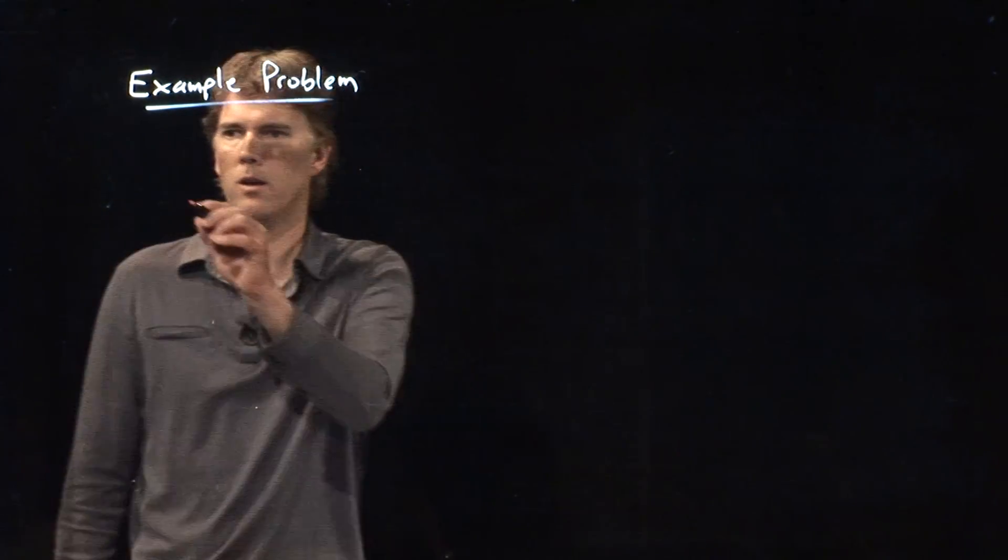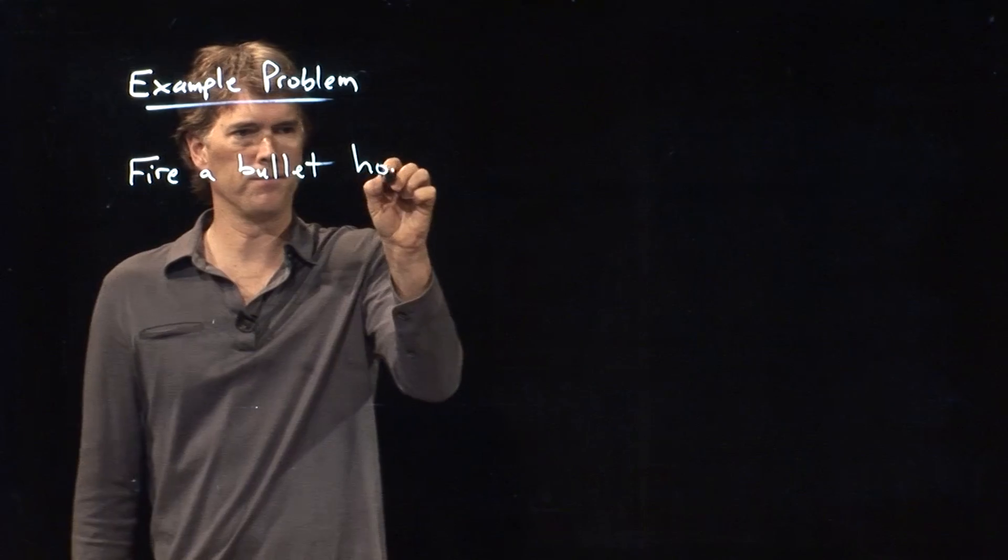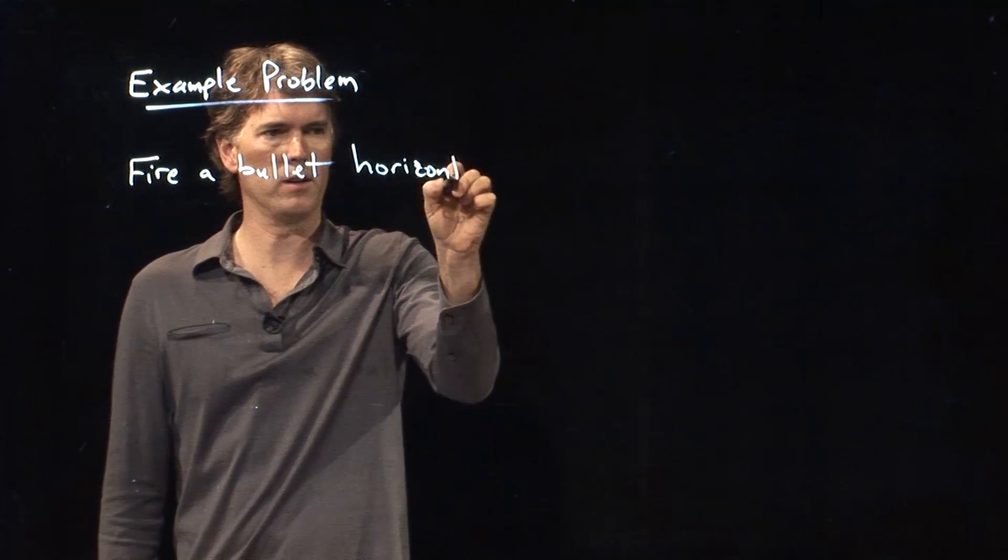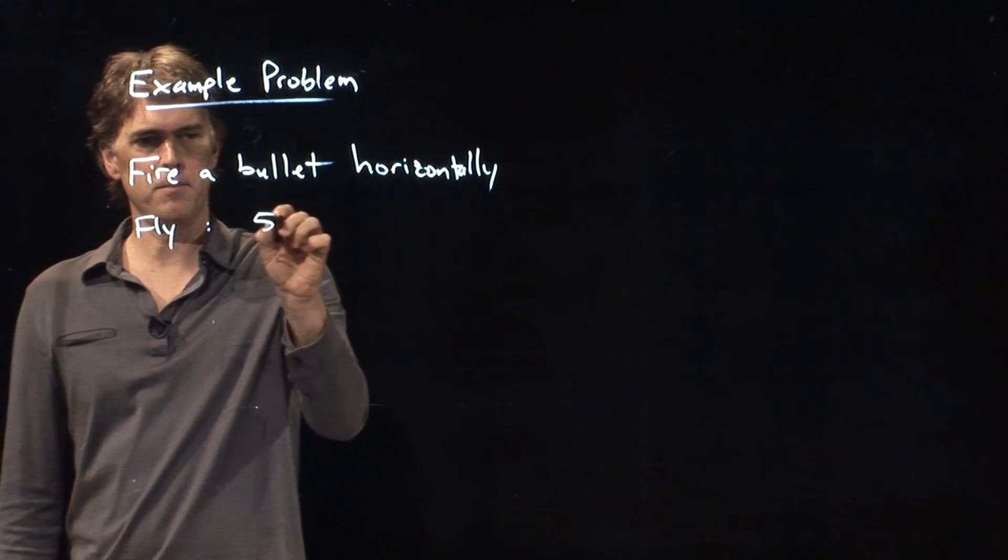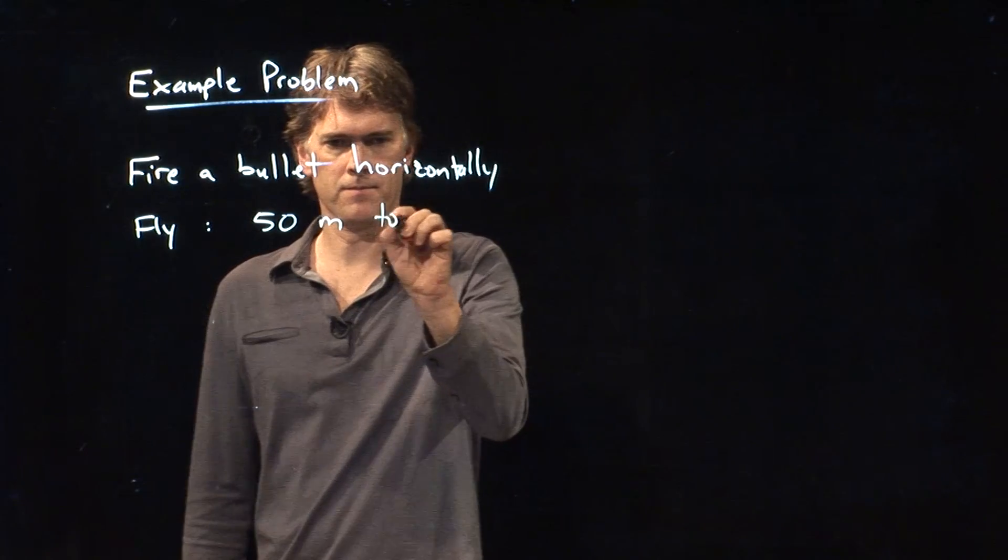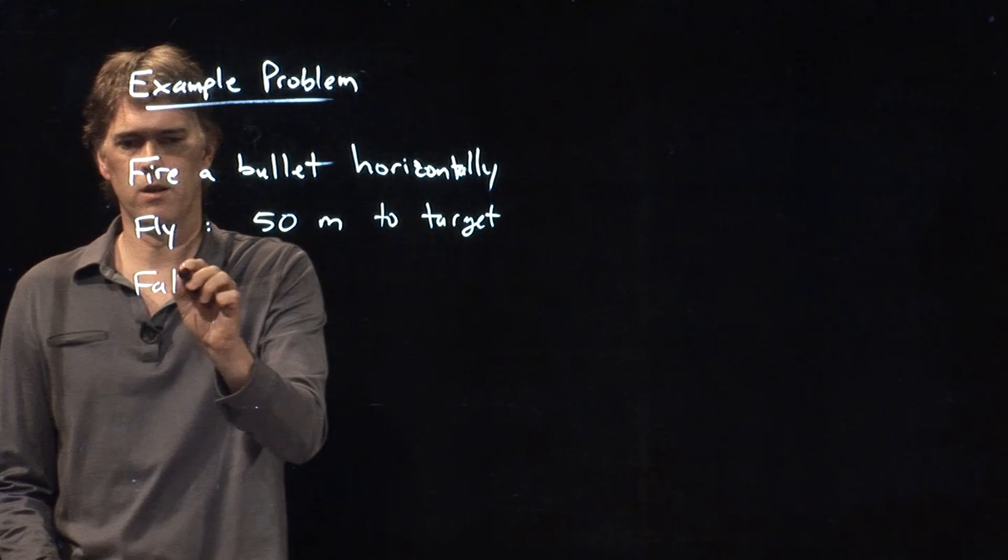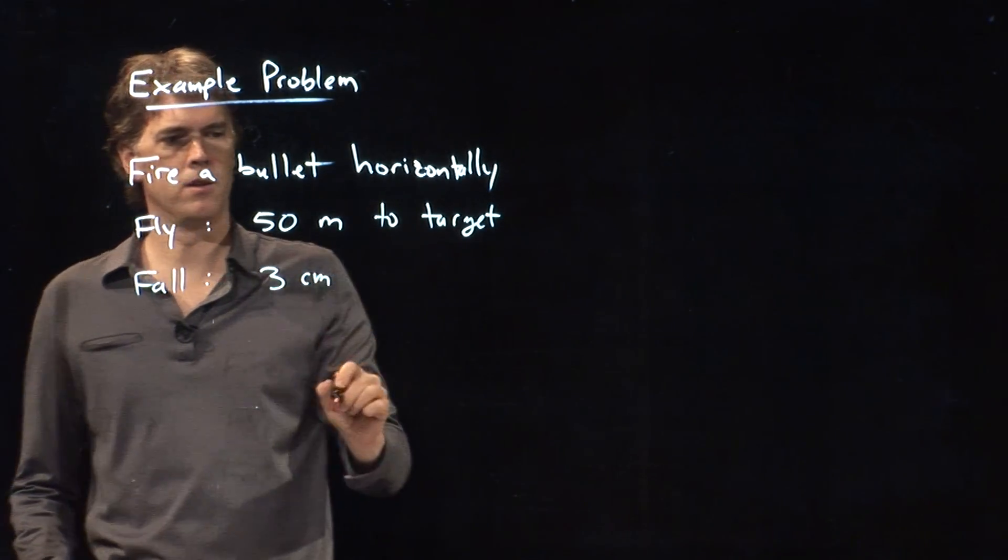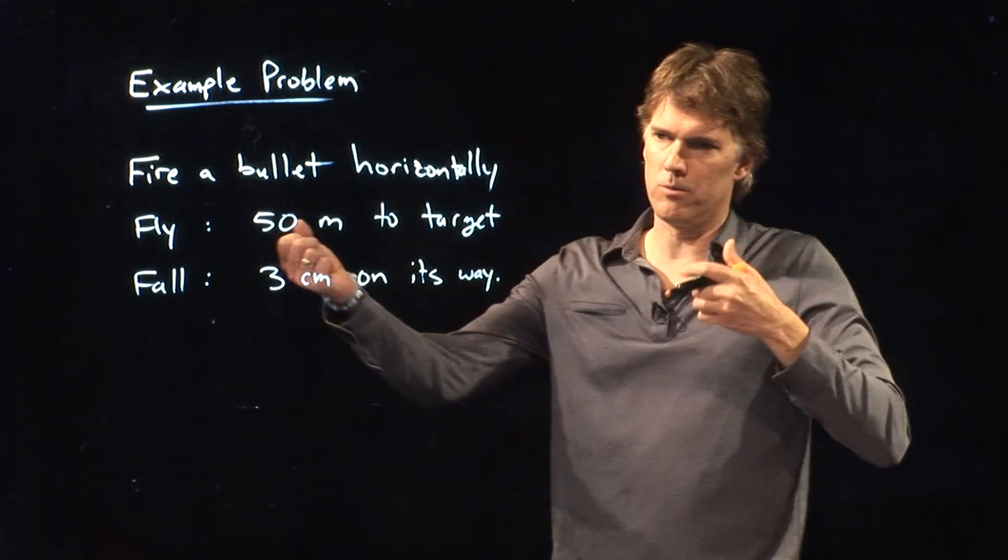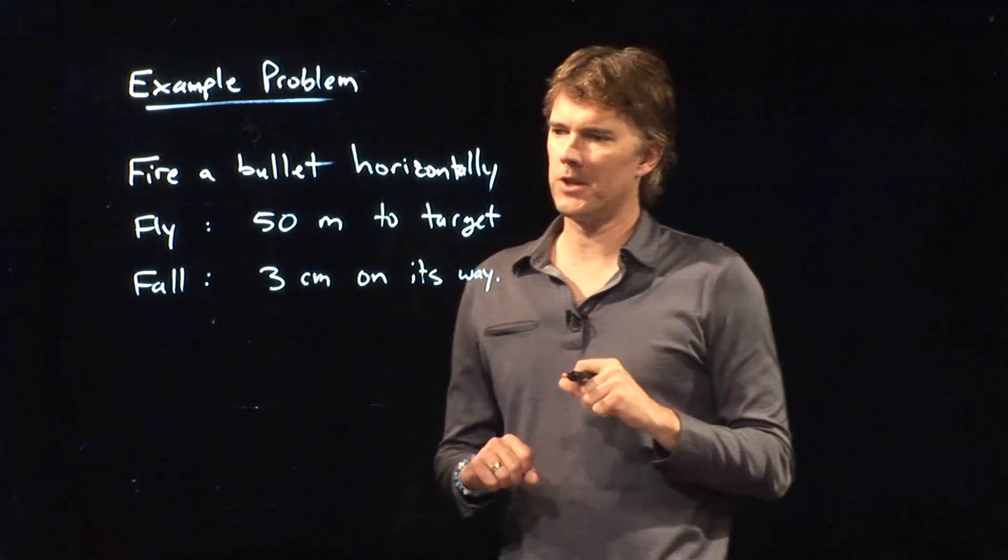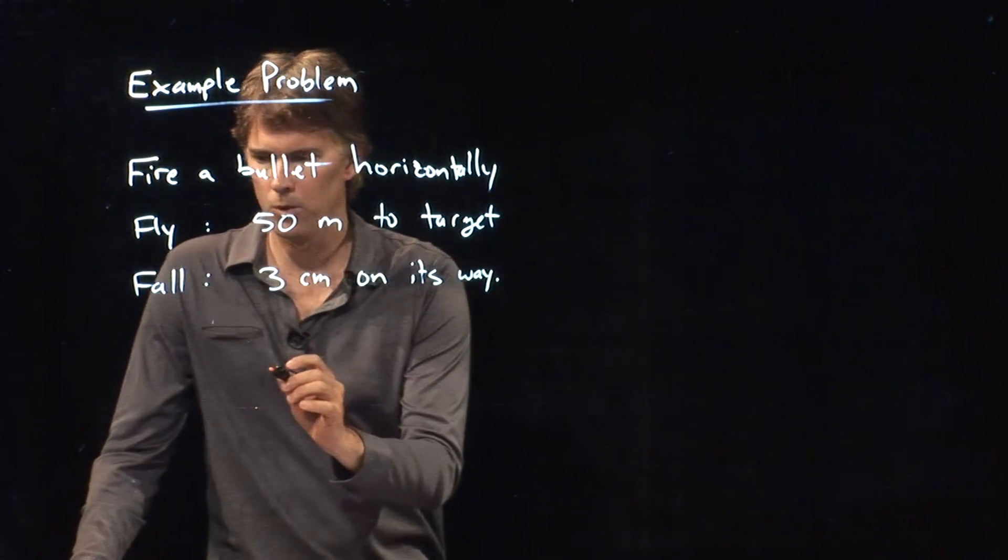And this is the following problem. You're going to fire a bullet horizontally, perfectly horizontally when you launch it, and it's going to fly 50 meters to a target, and it will fall 3 centimeters on its way. So you are firing your rifle 50 meters to the target, and the bullet's going to fall 3 centimeters on its way. So let's draw what this looks like.